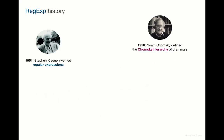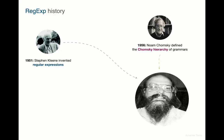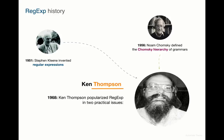Almost 12 years later, the famous Unix hacker Ken Thompson made regular expressions popular by applying them to two practical problems: pattern matching — that is, string search with regular expressions — and lexical analysis, that is, implementing scanners or tokenizer modules in parsing programming languages. Since then, regular expressions became widely used in Unix, text editors, and today in almost every programming language.